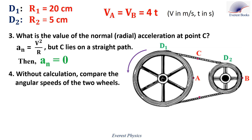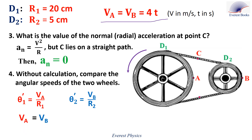Without calculation, compare the angular speeds of the two wheels. The angular speed of wheel D1 is given by theta 1 prime equals V_A over R1, and the angular speed of wheel D2 is theta 2 prime, which is equal to V_B over R2. Examining the two equations: V_A equals V_B, and R1 is greater than R2. Then theta 1 prime is less than theta 2 prime.